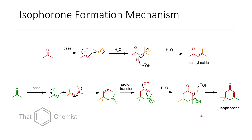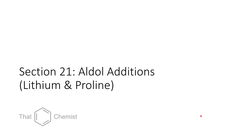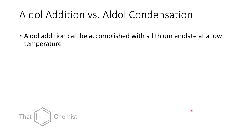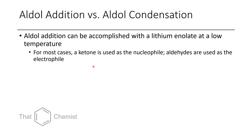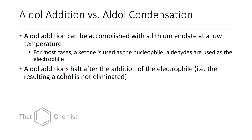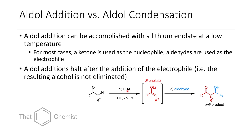Ketones with acidic alpha protons can self-react if there's no better electrophile available. Now let's get into today's chemistry: aldol additions. Similar to an aldol condensation reaction, we can undergo an aldol addition. For most cases, you'll use a ketone as your nucleophile, which will form an enolate, and then an aldehyde will be used as an electrophile.